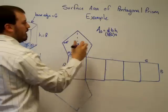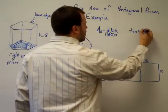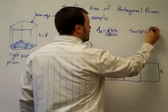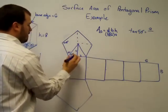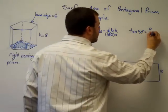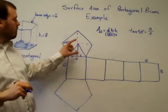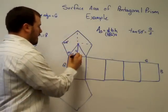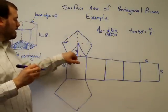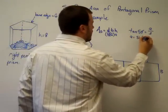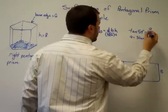I'll use some trig. Tangent of 54 degrees is equal to the opposite side, A, over the adjacent side, which is three. It's half of the base edge there. Again, an isosceles triangle, when you draw in an altitude, it's also the median. So it divides that in half. So A is equal to three times tangent of 54 degrees.